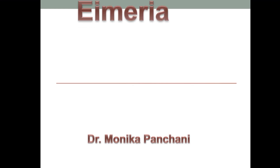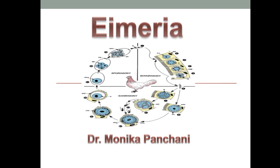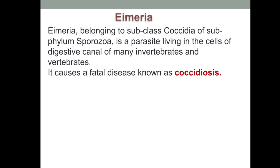The next protozoan is Eimeria, which infects poultry animals like chickens and birds as well as cattle and dogs. Eimeria belongs to subclass Coccidia of subphylum Sporozoa and is a parasite living in the cells of the digestive canal of many invertebrates and vertebrates. It causes a fatal disease known as coccidiosis.